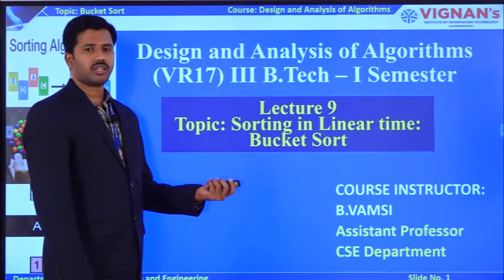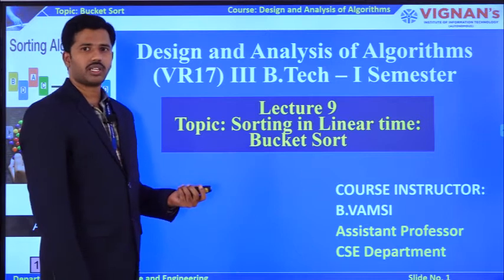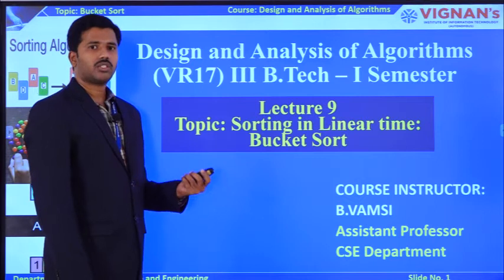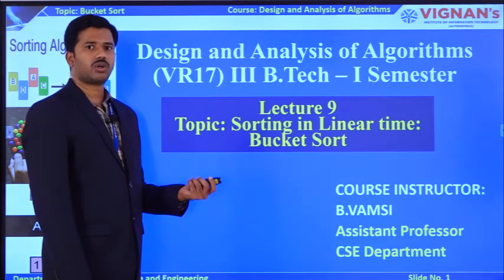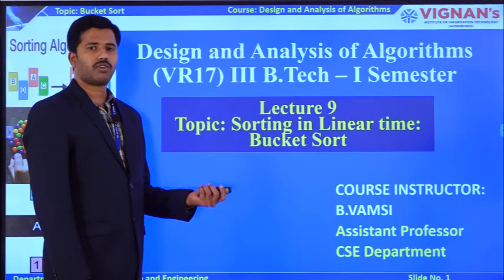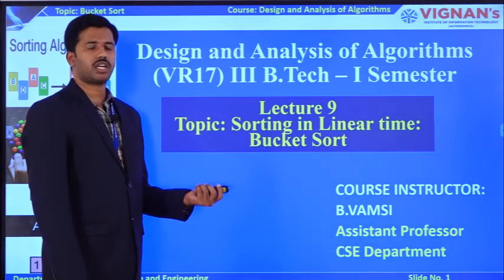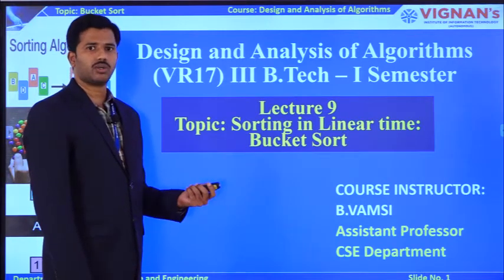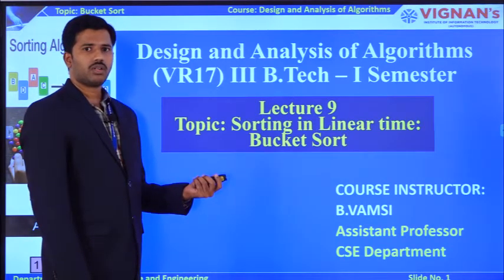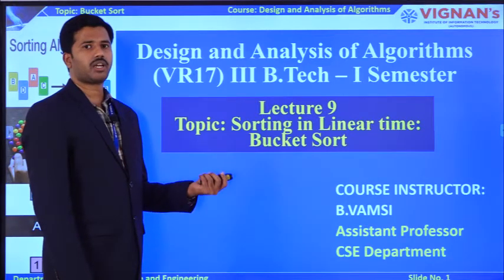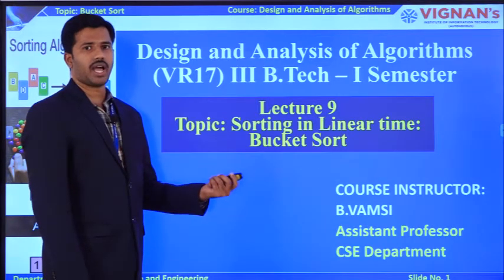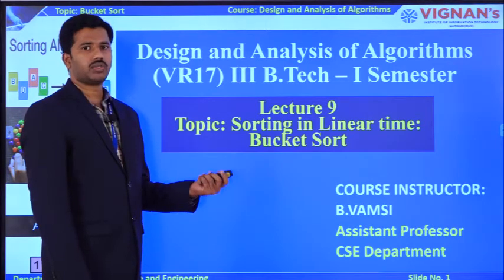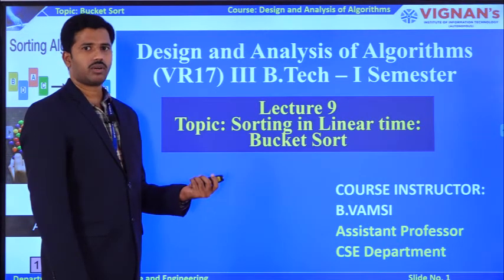In the last lecture, number 8, we have seen the Radix sort algorithm — the procedure as well as analysis. The main theme of Radix sort is to convert the unsorted array into sorted manner with the help of digit queues, starting from 0 to 9. In bucket sort, we are also going to have that data structure, but here we are going to call them as buckets. So you need to take buckets in the range starting from 0 to 9, like your Radix sort.